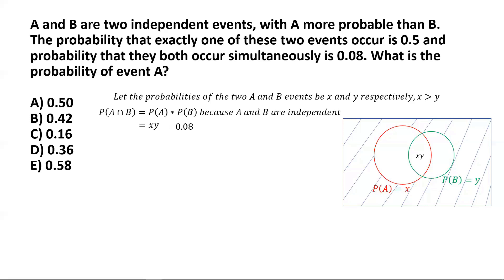The common area between the two circles represents the probability of the two events occurring simultaneously, which is XY. The portion of the red circle (event A) that is not part of the overlap is X minus XY. This represents the probability of event A occurring alone, without the occurrence of event B.